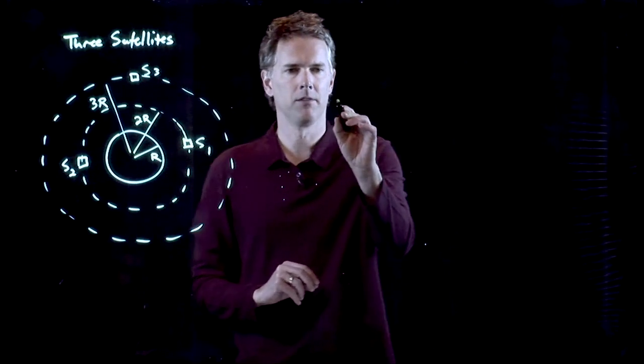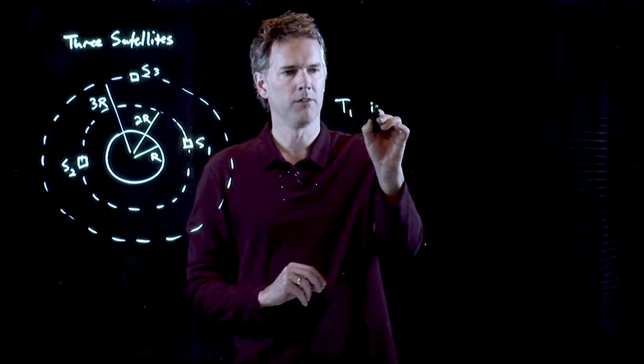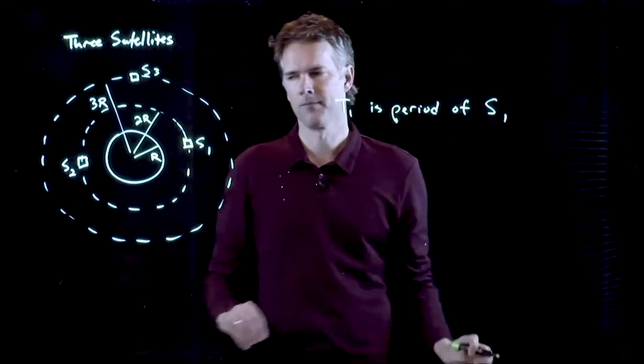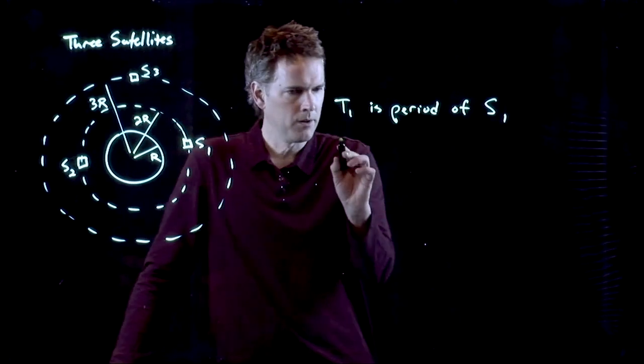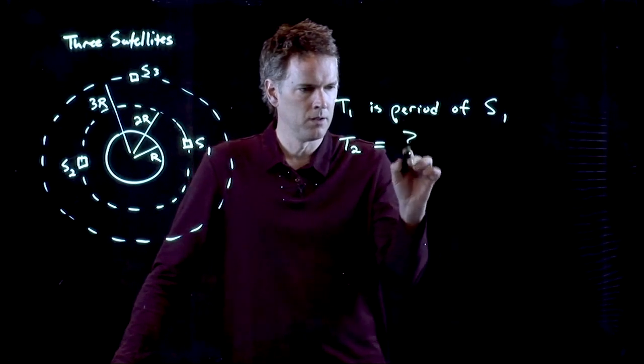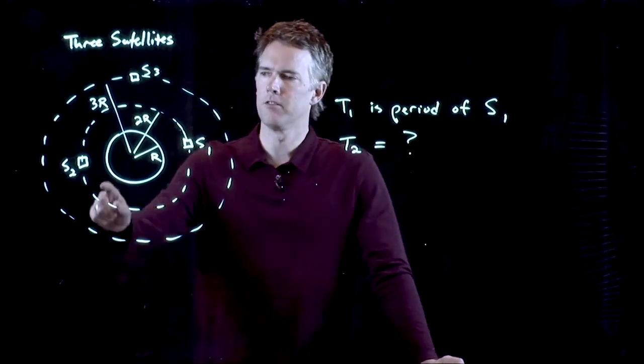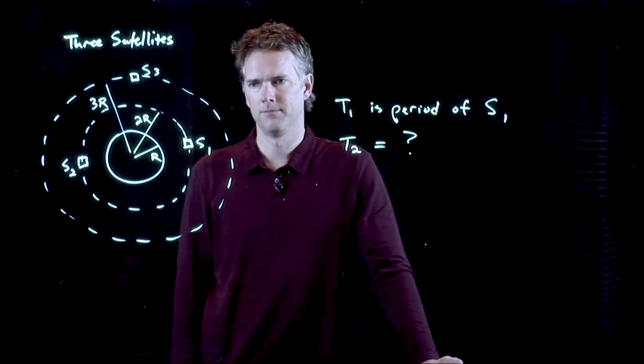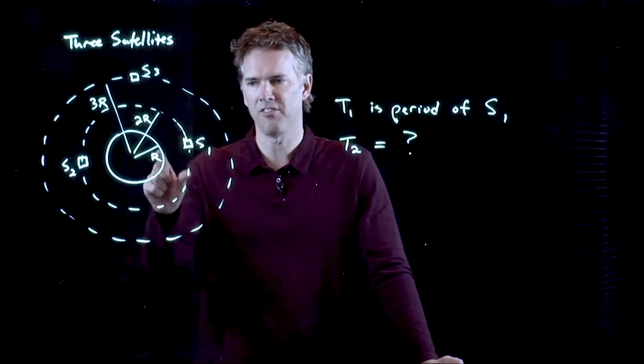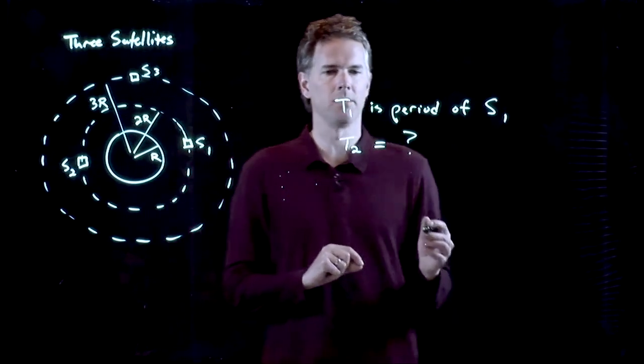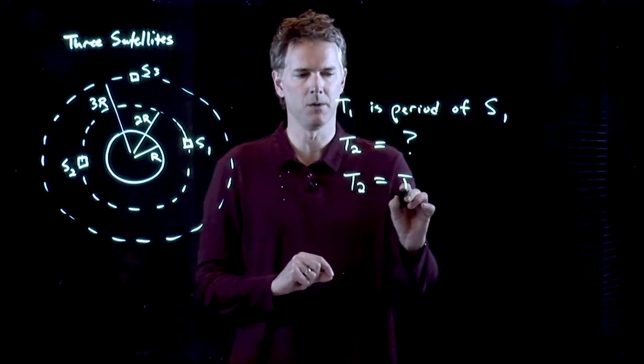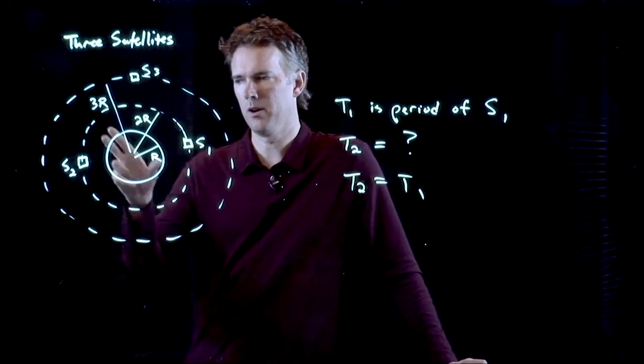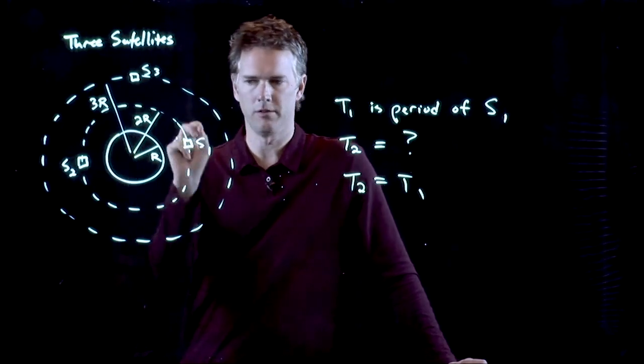And before we do that, let's tell you the following. T1 is the period of satellite S1. What about T2? What do you think the period of satellite 2 has to be? Yeah, if it's at the same altitude it has to be exactly the same. T2 is equal to T1. It's independent of the mass of those satellites. Period of T2 is exactly equal to T1.